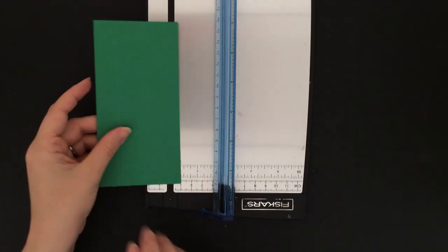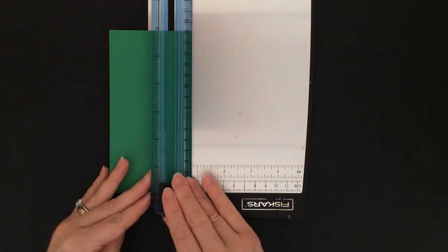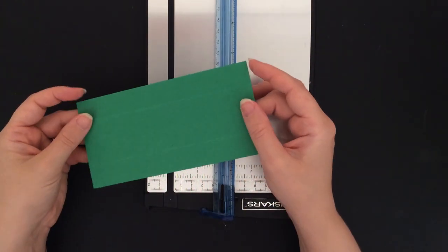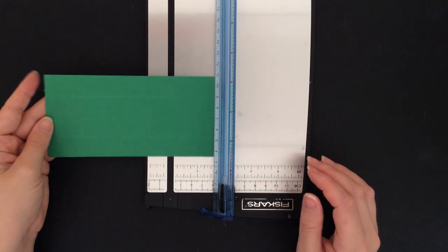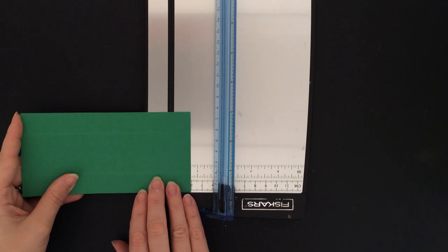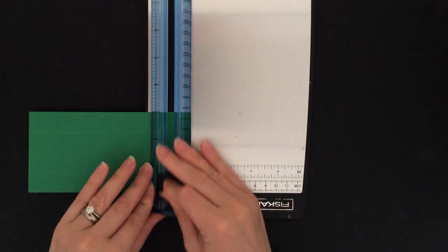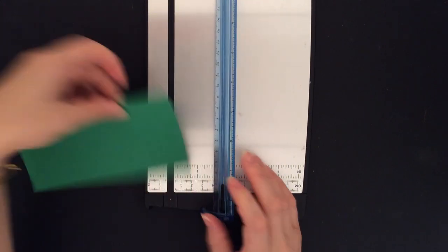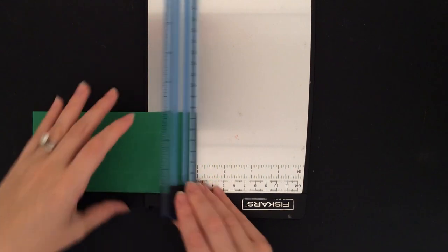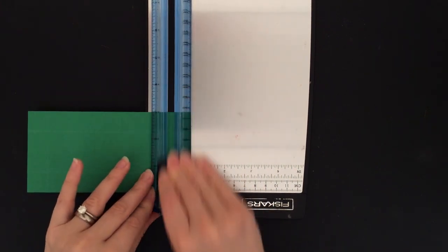We're now going to turn it over, and again, at the 3 quarter inch mark, we're going to score again. We're going to turn it so that it looks like this, and once again, at the 3 quarter inch mark, we are going to score again. And again, at the 3 quarter inch mark, we'll score again.